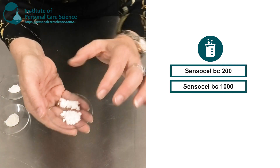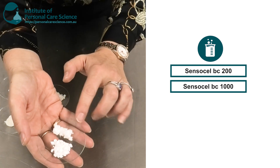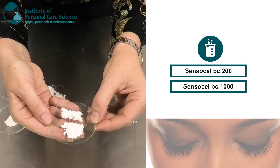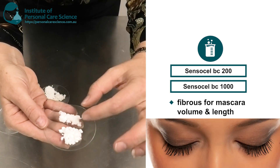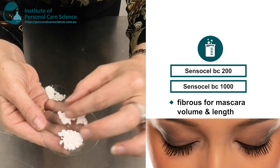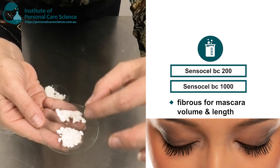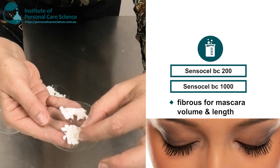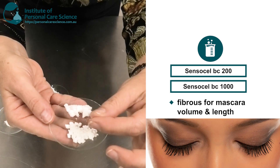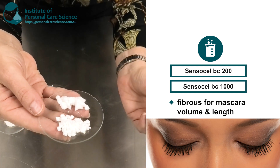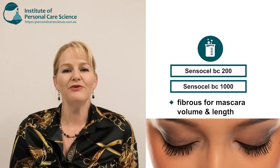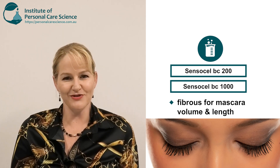Next is their BC 200 and BC 1000 materials. As you can see, these are quite fibrous — in fact I can even pick these up. These are the types of materials that get used in your mascaras for lash enhancing and volume effects. Stay tuned on that idea, I'll bring you a video soon.